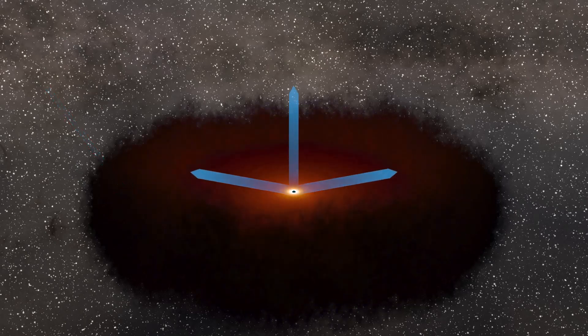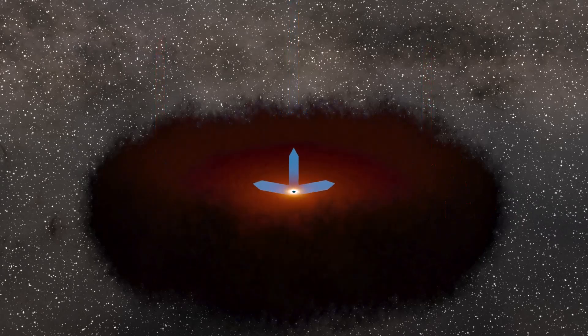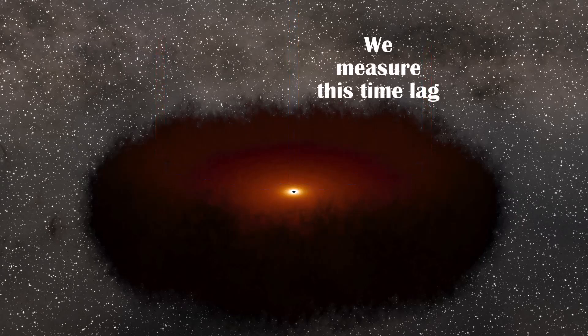So those changes in the emission from the AGN also cause the emission from these clouds to change. But because light from the AGN has to reach them, which takes a finite amount of time, we only observe the change in emission from these clouds at a time after seeing the AGN continuum change. The time difference is what we want to measure because it corresponds to the distance between the black hole and the broad line region.